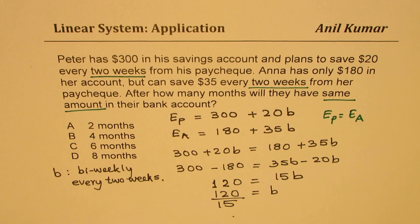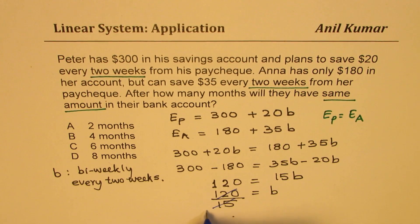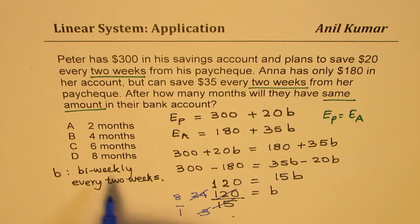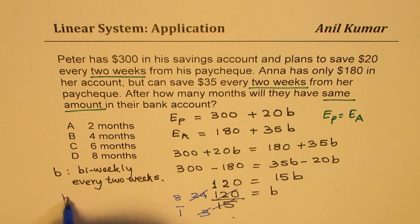Now, this question could be without a calculator, so you may do this calculation manually. You can divide by 5 — straightforward — so we get 3 and then 24 divided by 3, giving us 8 over 1. So B equals 8 bi-weeklies.